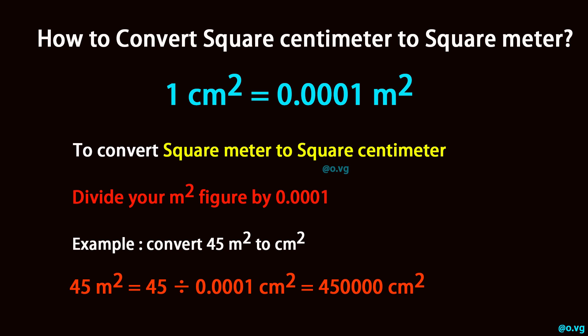45 square meter equals 45 divided by 0.0001 square centimeter, equals 450,000 square centimeter.